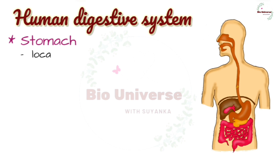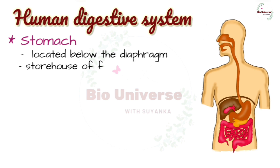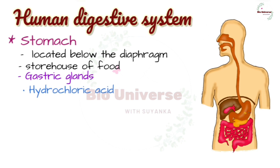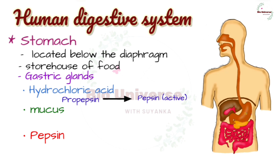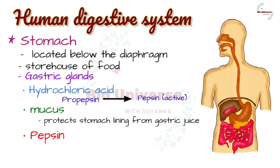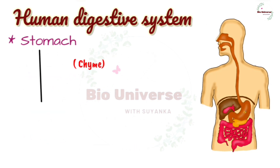The stomach is a muscular structure located below the diaphragm, which serves as a storehouse of food where partial digestion takes place. The inner lining of the stomach has gastric glands which release hydrochloric acid. Gastric juice converts pepsinogen to active pepsin and kills bacteria ingested with food. Mucus protects the stomach lining and glands from being digested by gastric juice. About three liters of gastric juice is produced per day. Pepsin breaks down proteins into peptones, and gastric lipase partially breaks down lipids.